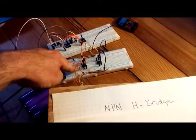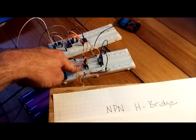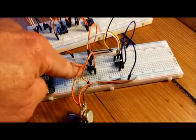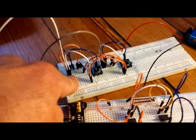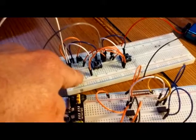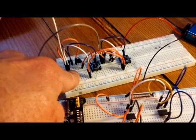We've got the 555 H-Bridge right here with two 555 timer chips. And behind that, we've got the NPN H-Bridge circuit with four NPN transistors.